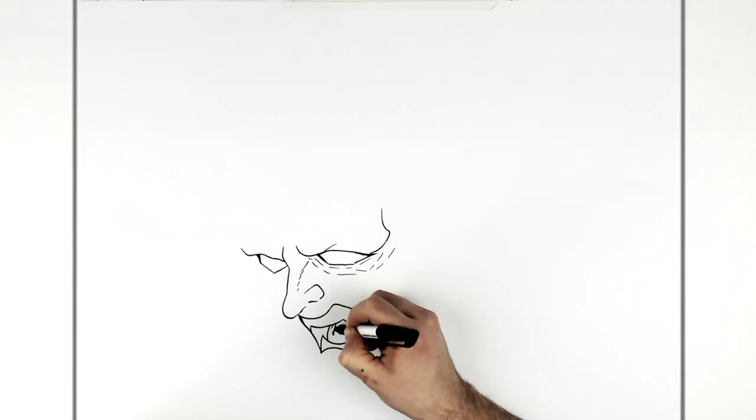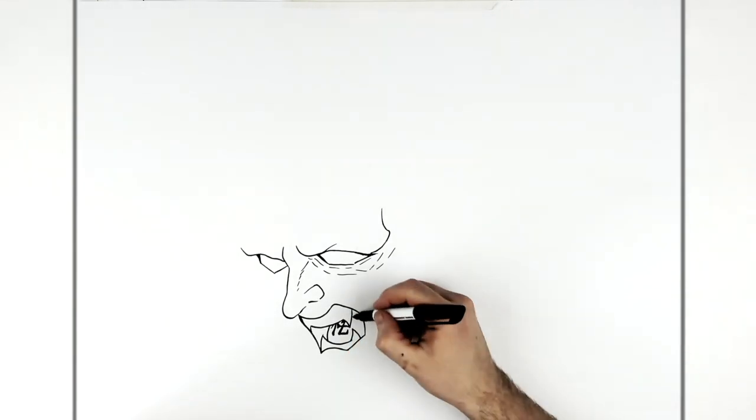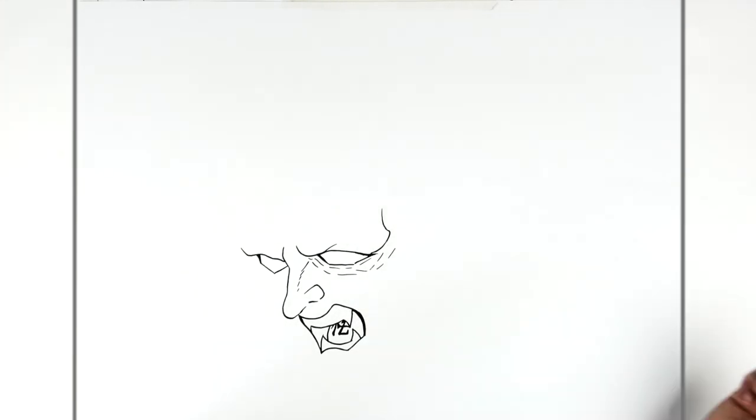Then we can just see his tongue going in there, and he's got some writing on his tongue. Some calligraphy kind of stuff. Like a shadow at the back of his tongue just here as well. Now a line just for his bottom lip.